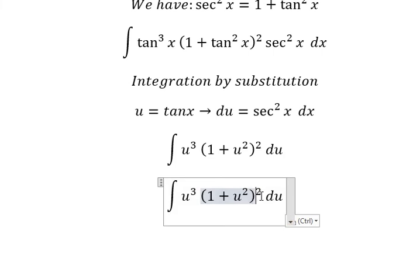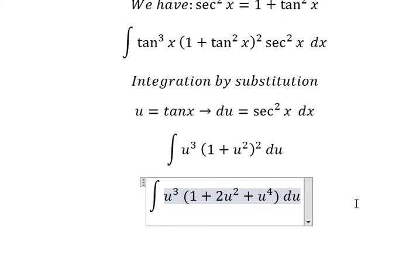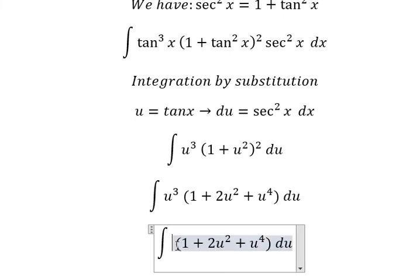Next we need to expand this one. And now u to the power of 3 multiplied by 1 plus 2u squared plus u to the power of 4. So we have u to the power of 3, u to the power of 5, and u to the power of 7.